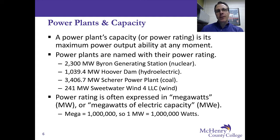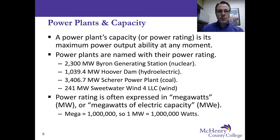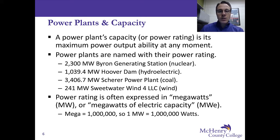Here we have power plants and their capacity. A power plant's capacity is its power rating — its maximum power available at any particular moment when it's turned on and running at 100%. Power plants are often named with their capacity next to their name. For instance, the Byron Generating Station, a nuclear power plant, has a 2,300 megawatt capacity. The Hoover Dam, a hydroelectric facility, has a 1,039.4 megawatt capacity. The Shearer power plant, which burns coal, has a 3,406.7 megawatt capacity, and the Sweetwater Wind Farm in Texas has a 241 megawatt capacity.